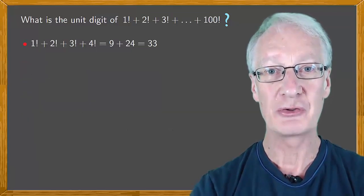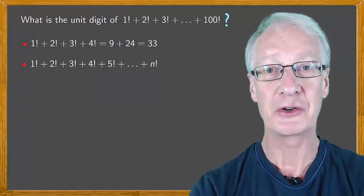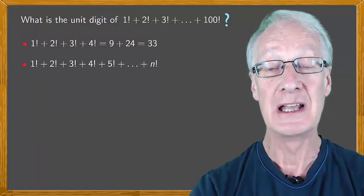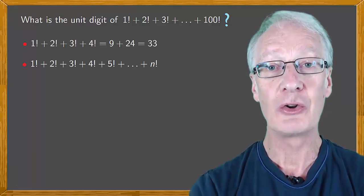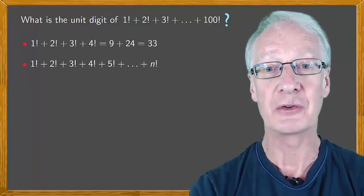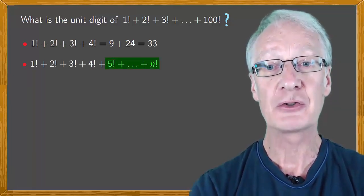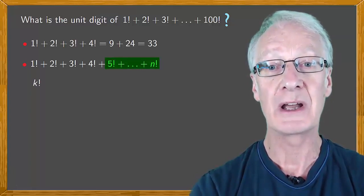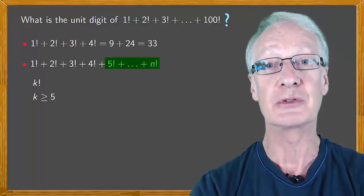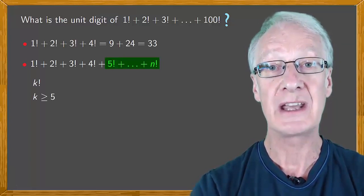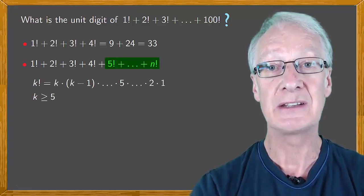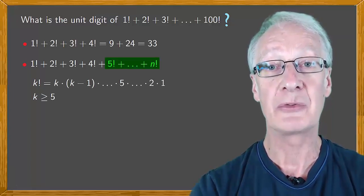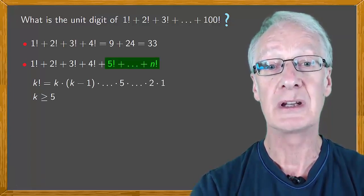Notice that in general for any sum 1! + 2! + 3! + 4! + 5! all the way up to n!, from 5! onwards the terms are k! where k is greater than or equal to 5, and k! is k times (k-1) and so on up to 5 times 4 times 3 times 2 times 1.